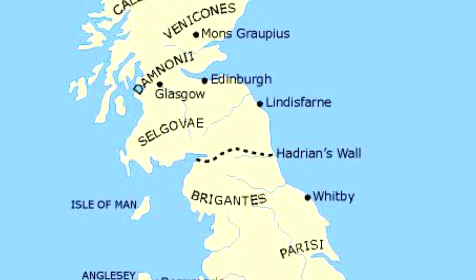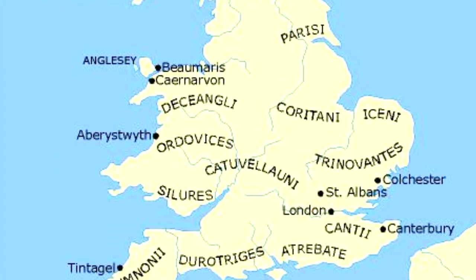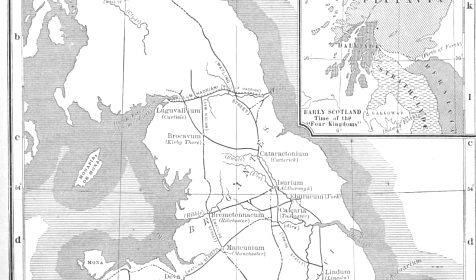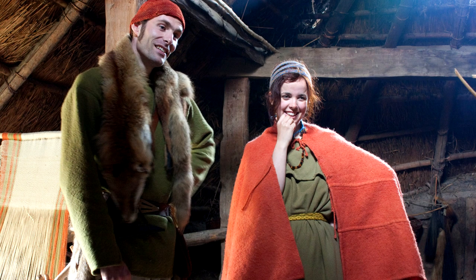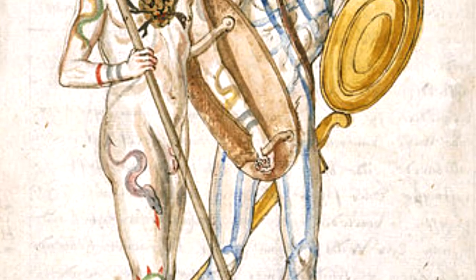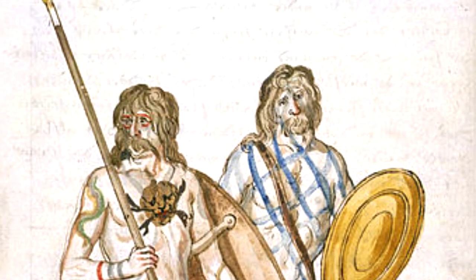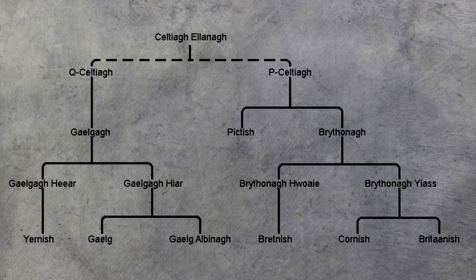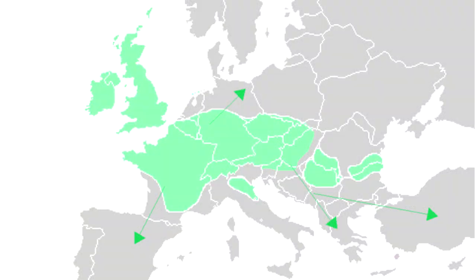The British Iron Age started when we first started seeing the significant use of iron tools and weapons, and it lasted until the Romanization of the southern half of the island. The people that inhabited Great Britain during this time were the Britons, also known as Celtic Britons or Ancient Britons. They lived in tribes and are often considered part of the Celtic culture, but this isn't quite accurate, as Celtic is a linguistic term referring to the languages spoken in Great Britain and also in other parts of Europe at that time.